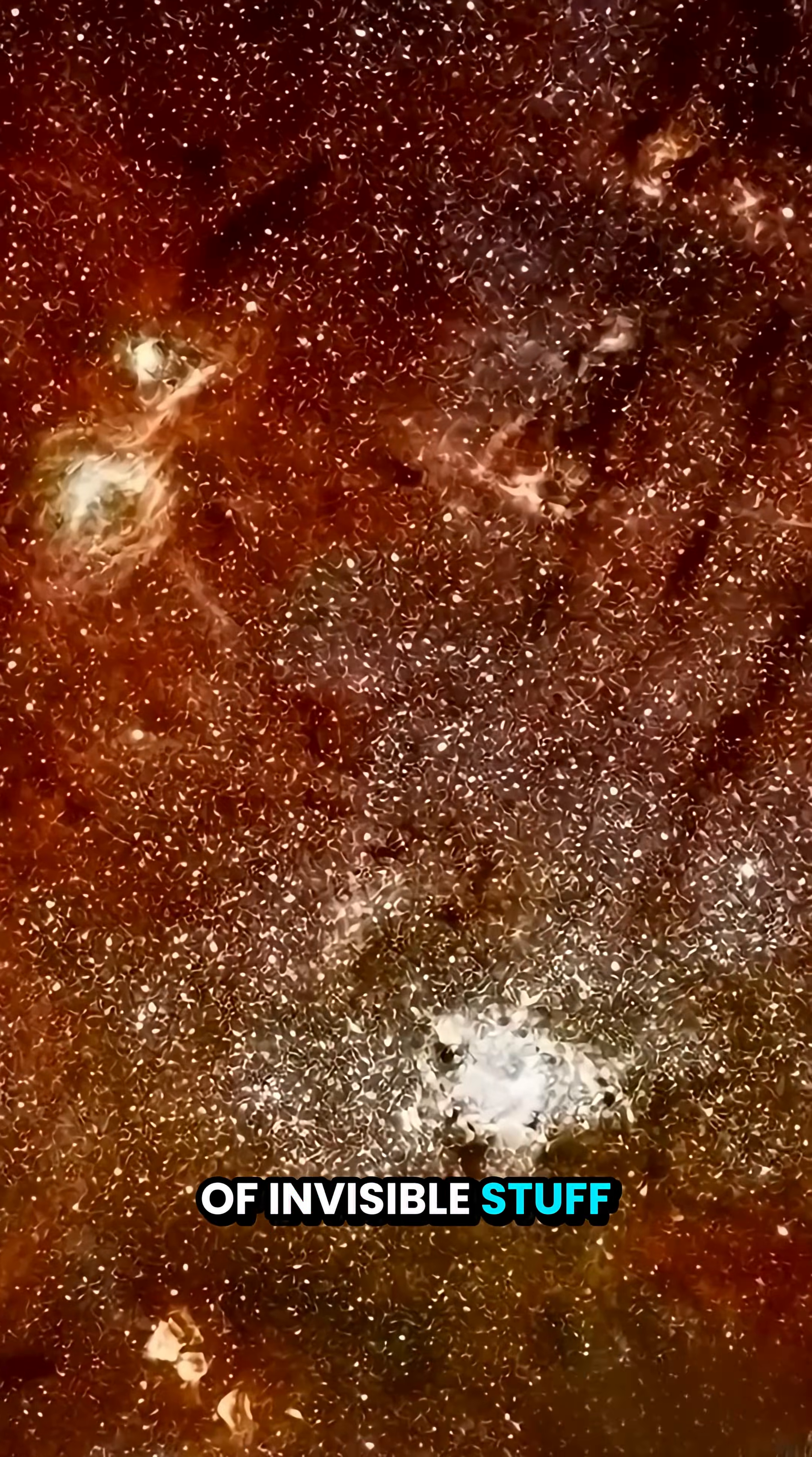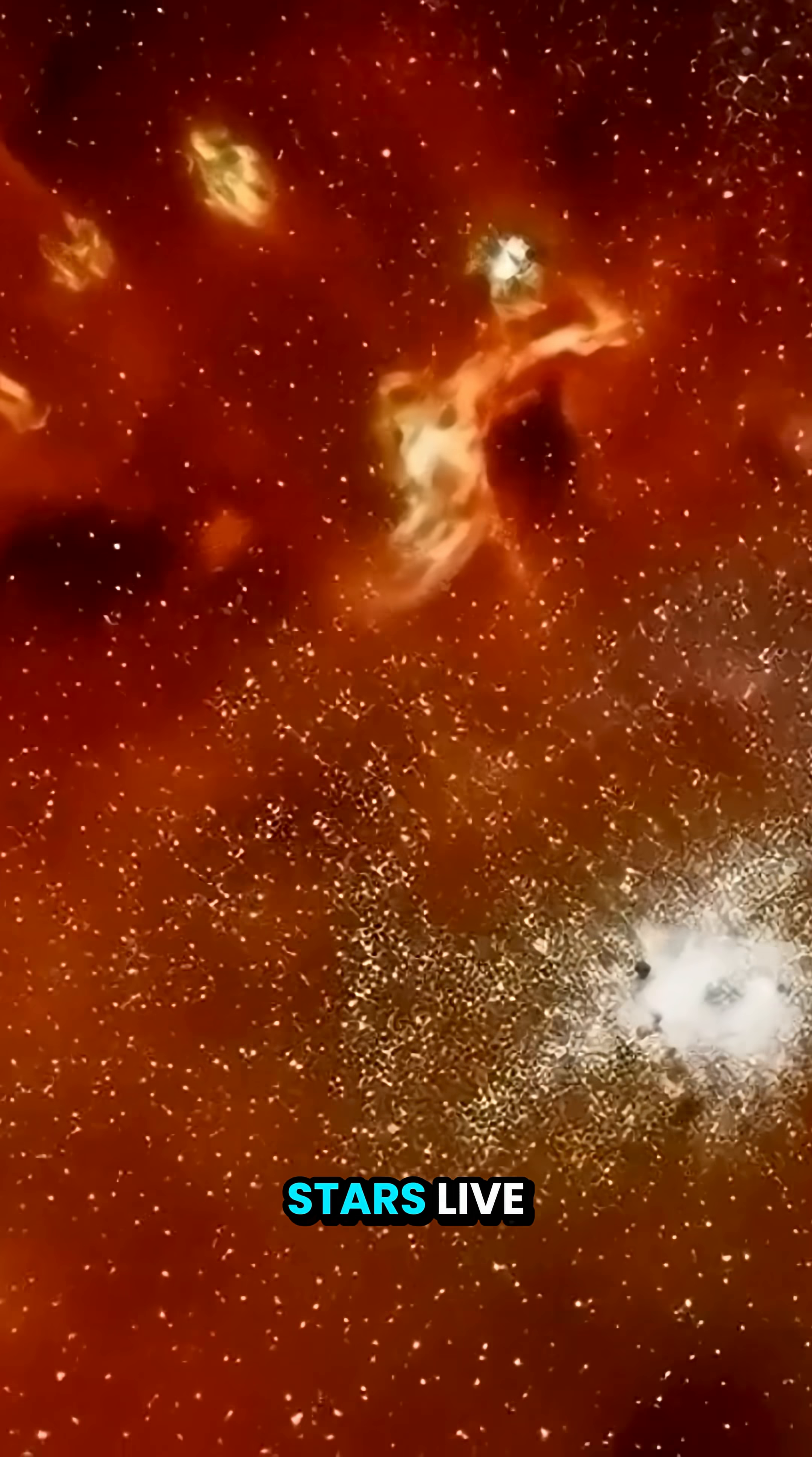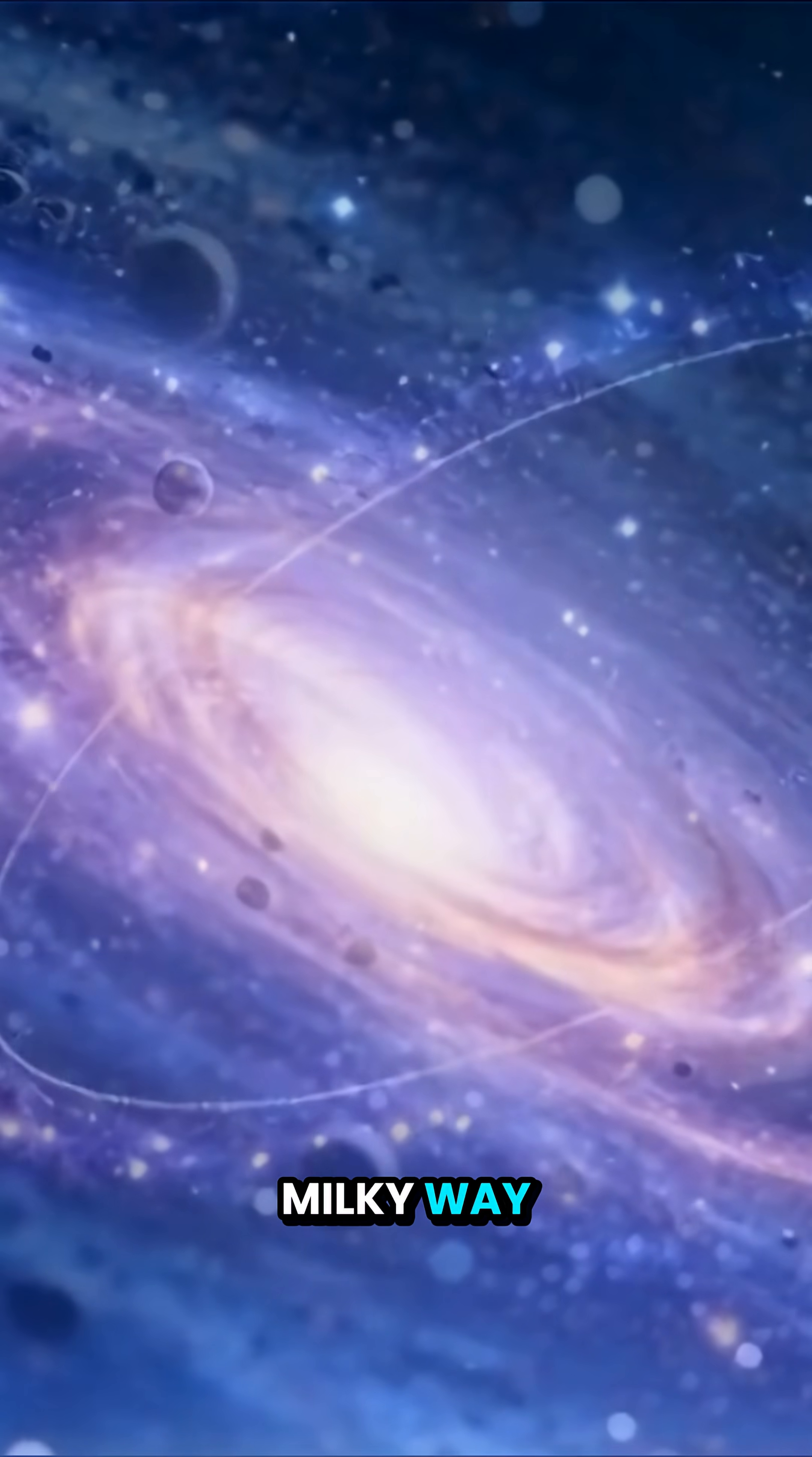Why do clouds of invisible stuff make a tiny glow in our galaxy? Because a new study spotted diffuse light where no known stars live. Could that glow be dark matter? Okay, quick setup: deep inside the Milky Way, beyond the bright stars, scientists spotted a very faint diffuse glow.